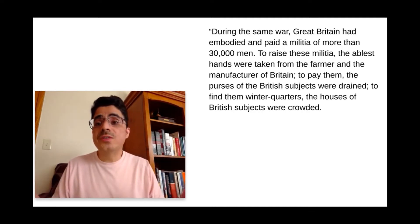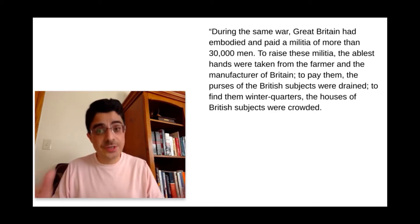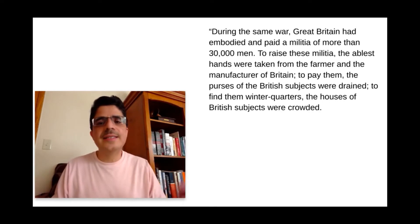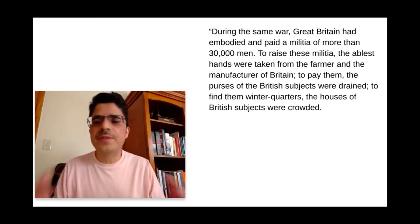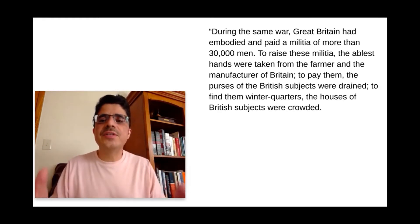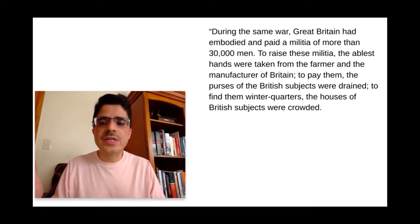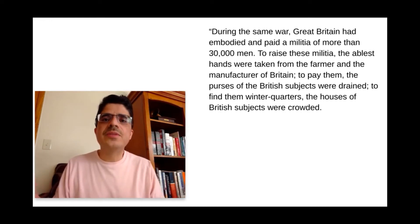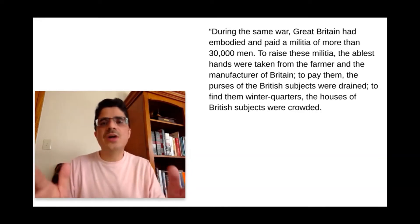He goes on to say: during the same war — the French and Indian War — Great Britain had embodied and paid a militia of more than 30,000 men. Yes, we know this from the historical record. To raise these militia, the ablest hands were taken from the farmer and the manufacturer of Britain. To pay them, the purses of the British subjects were drained. To find them winter quarters, the houses of the British subjects were crowded. This is an interesting point regarding quartering of soldiers — it wasn't initially always a bad thing.